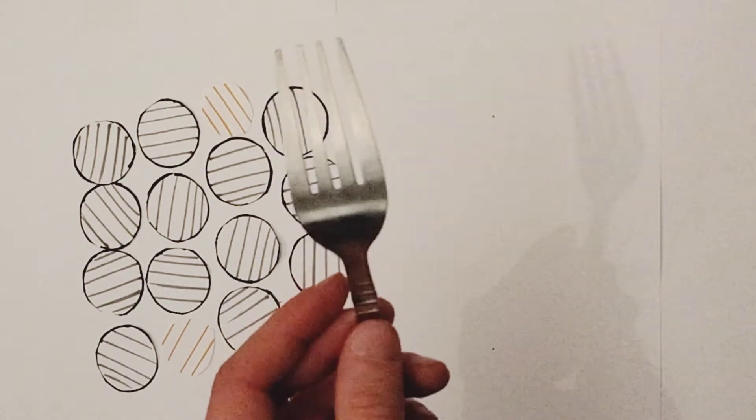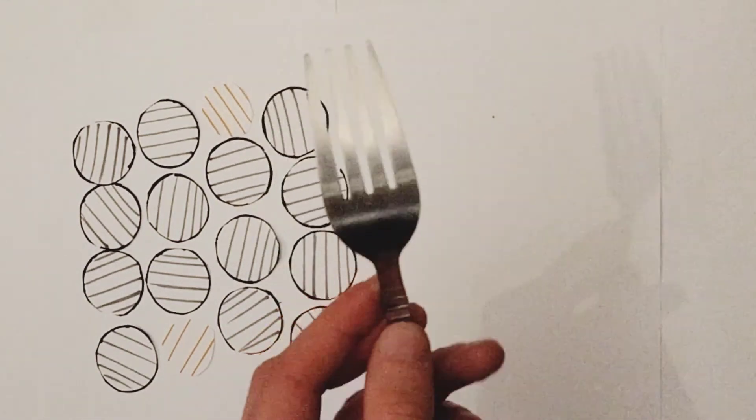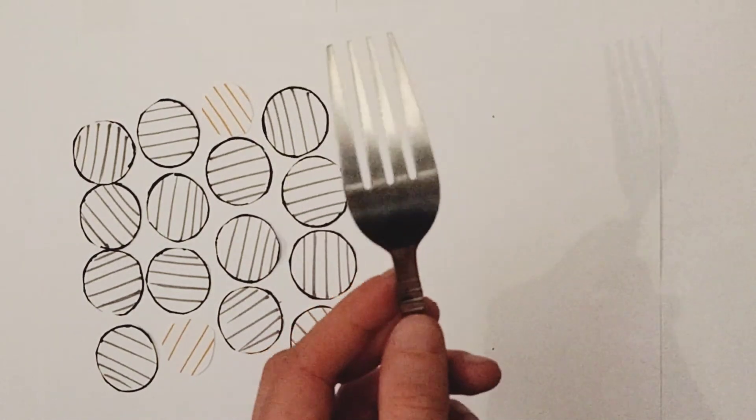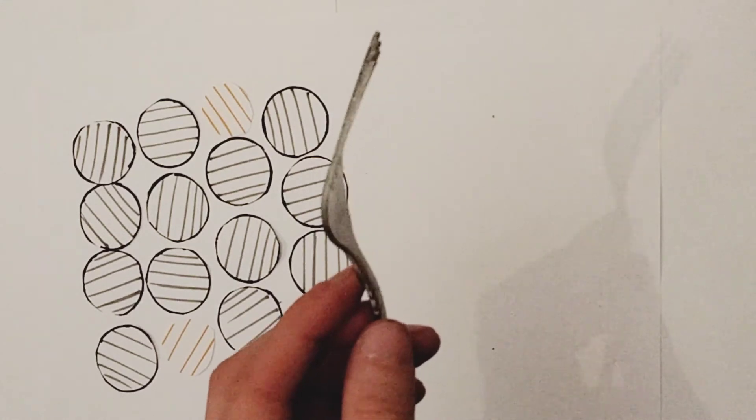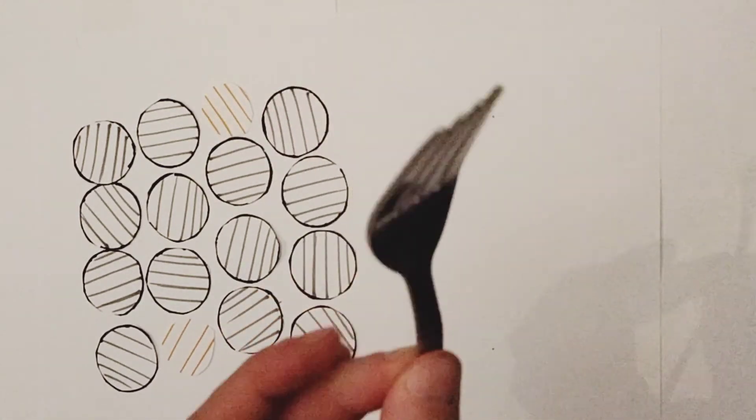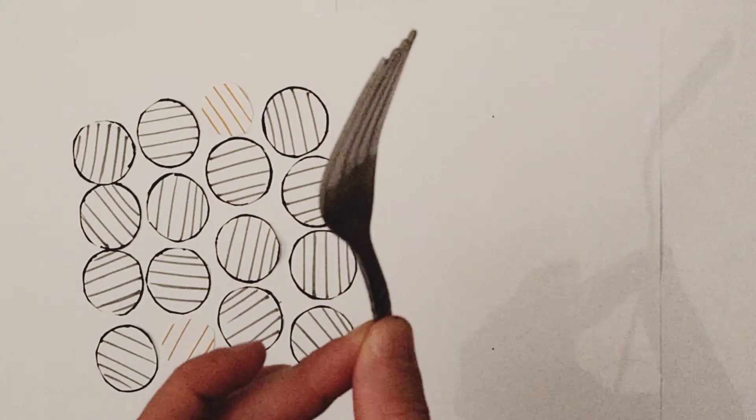So the reason why you can't taste that bitter metallic flavor of the fork itself is because an invisible layer of chromium oxide is protecting the metal, and therefore you're tasting the chromium oxide which has no flavor and not the metallic surface itself.